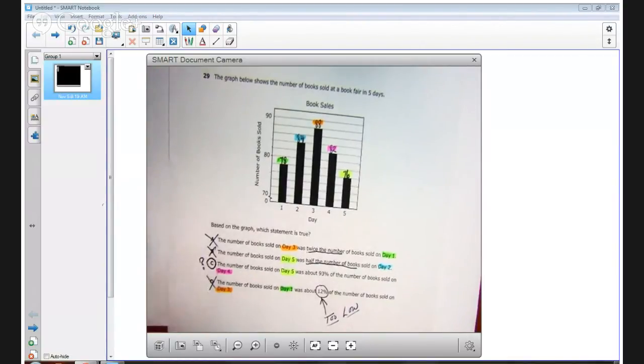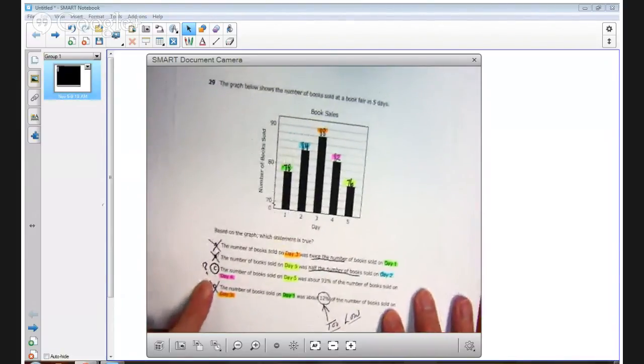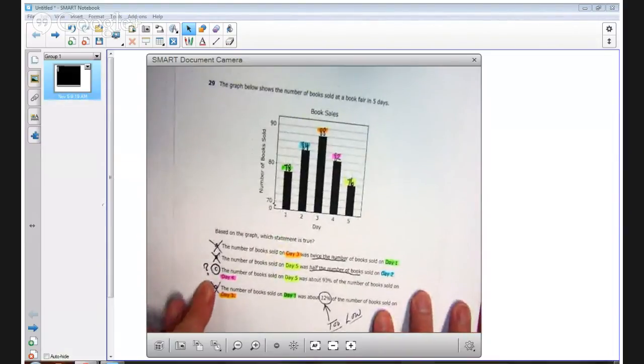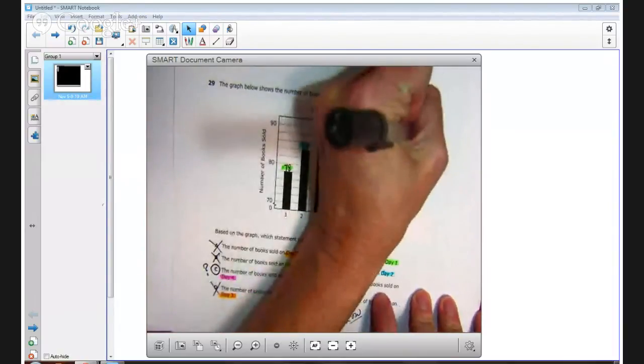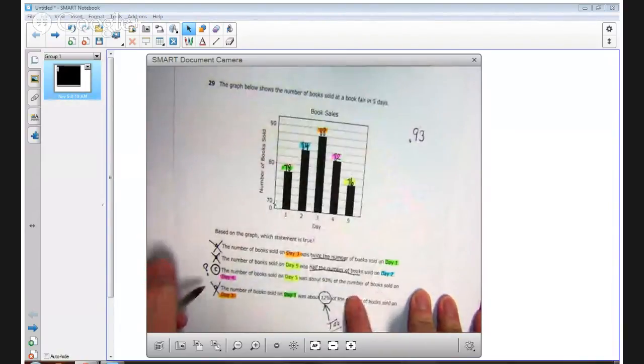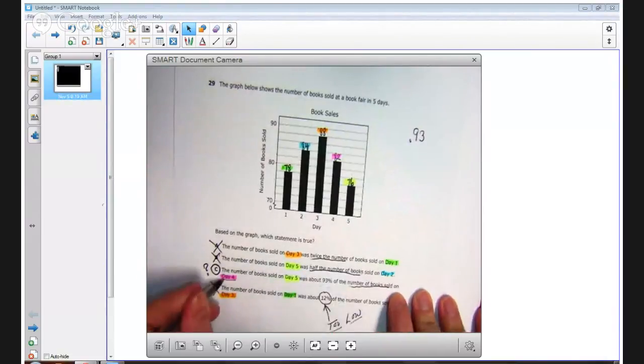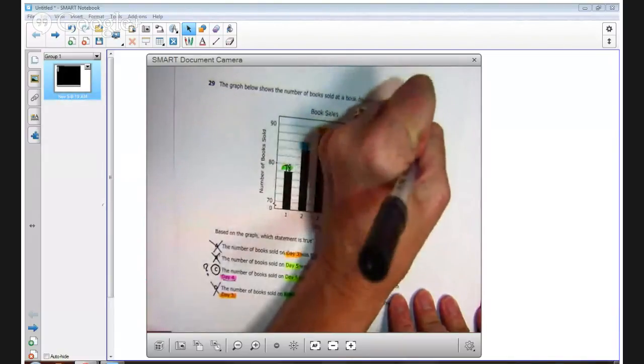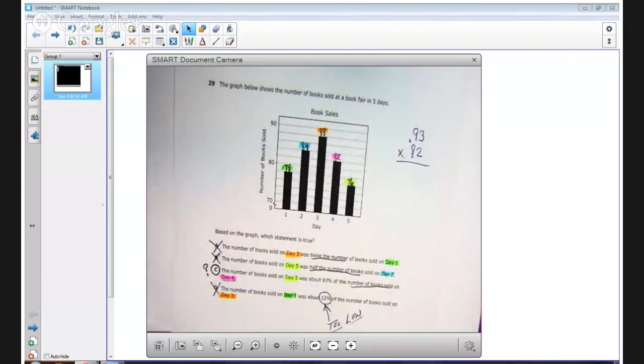Now, having said that, it may be a good idea, if your student has time, to do the actual calculation. So let's go ahead and do that now. They really don't have to do it, but we'll do it anyway. The number of books sold on day five was about 93% of the books sold on day four. Well, if we want 93%, we can multiply the decimal, 93 hundredths, times the number of books sold on day four, and that was an 82. And then we can multiply this out.